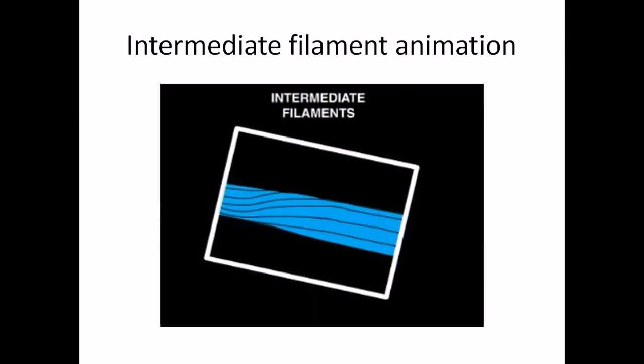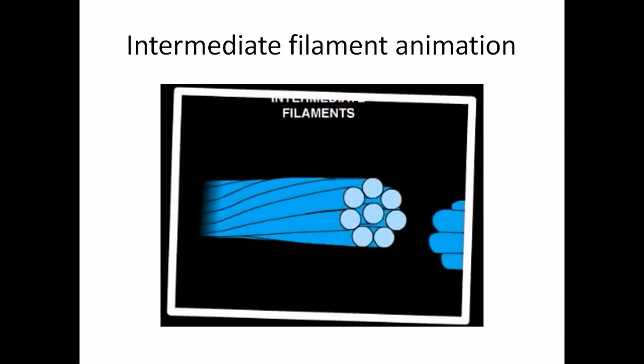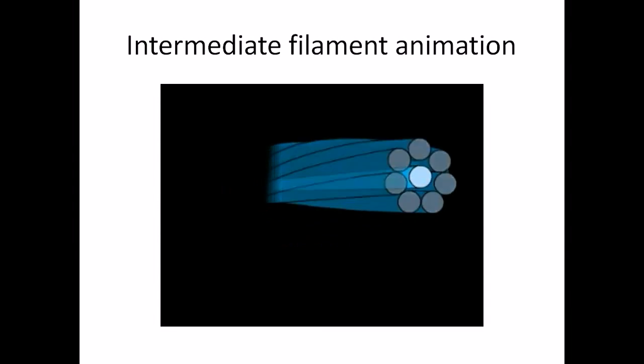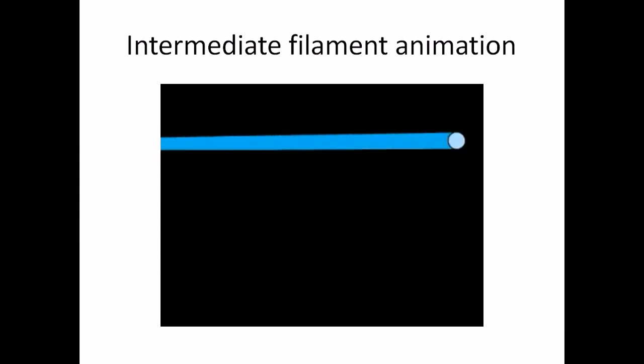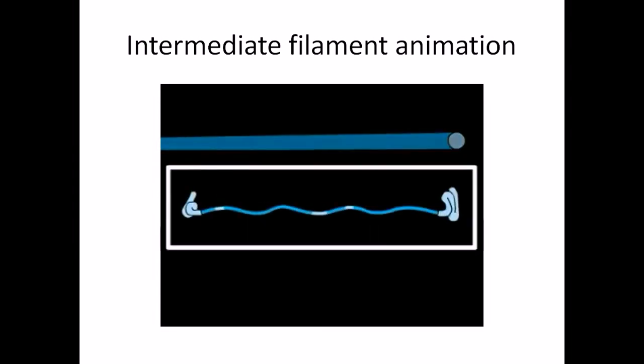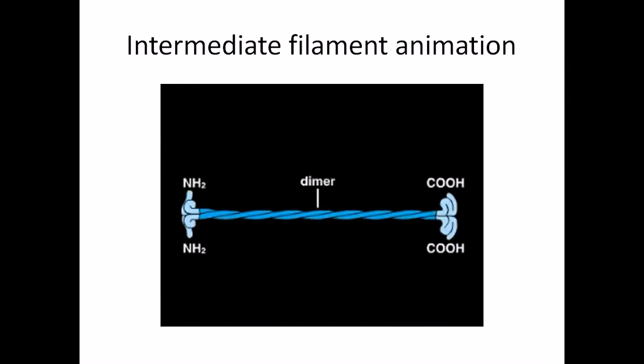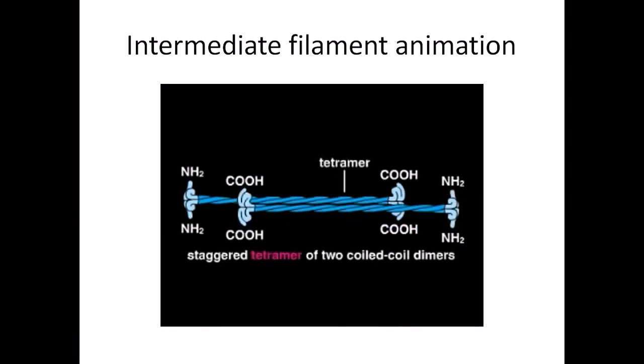Each filament is rope-like, consisting of eight thinner strands made of a precise hierarchical arrangement of protein subunits. At the lowest level, two monomers associate with each other to create a twisted dimer. Two dimers then line up to form a staggered tetramer. Note that the two dimers are arranged in opposite orientations with their amino terminal ends away from each other, so that the two ends of the tetramer are indistinguishable.